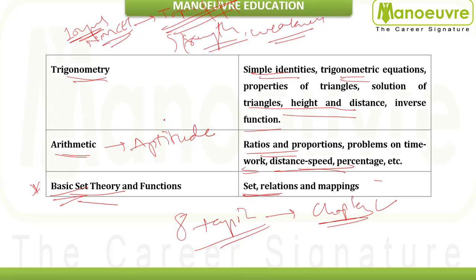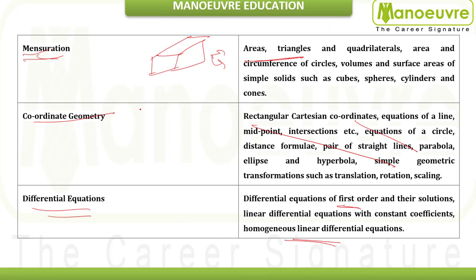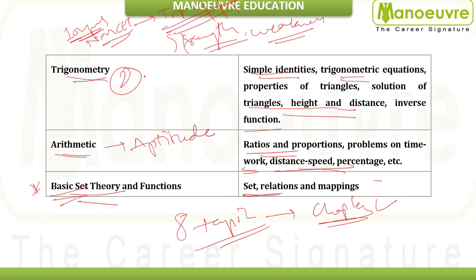Here is the recommended preparation sequence. Start with arithmetic first — ratio and proportion, percentage, speed maths. These are the basic concepts of maths and should be covered before stepping into advanced topics. Then go with calculus — it is a very small and easy topic with standard-type questions appearing in the exam. After that, move to trigonometry, which also has standard questions and tricks you can use to solve them quickly.